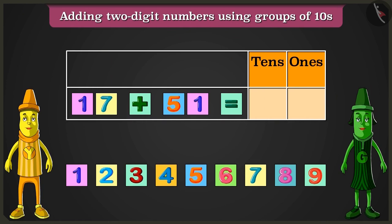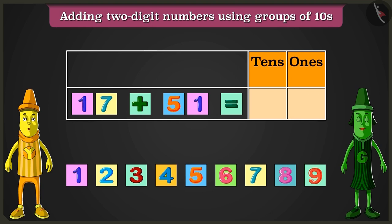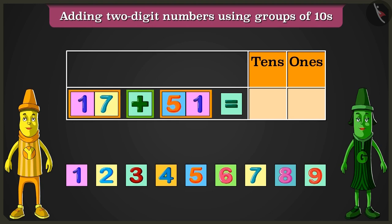Greeny, look, this is a number block. Come, the number made out of these blocks, 17 and 51 have to be added.